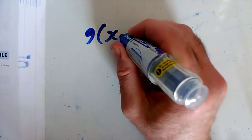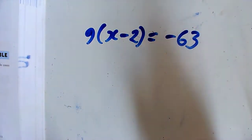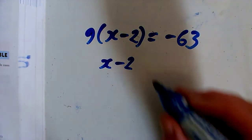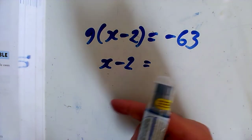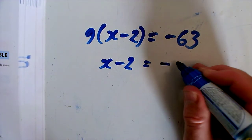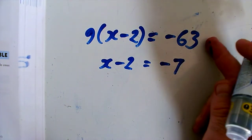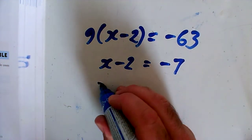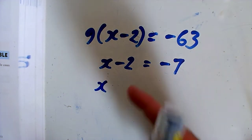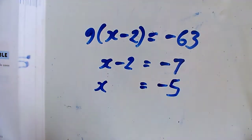Question O: 9 times the bracket x minus 2 equals minus 63. I'd like the bracket on its own, so I'm going to divide both sides by 9. Dividing both sides by 9, x minus 2 equals minus 7, since minus 63 divided by 9 is minus 7. Adding 2 to both sides, x equals minus 5.